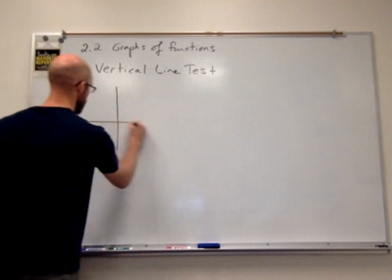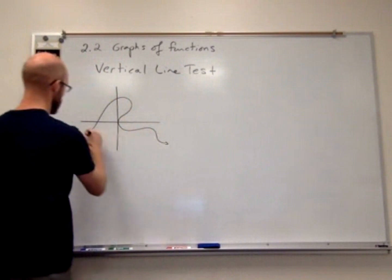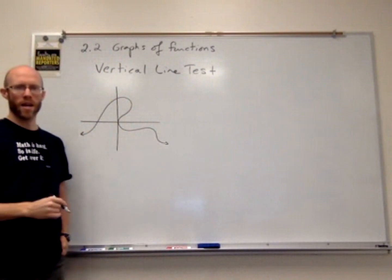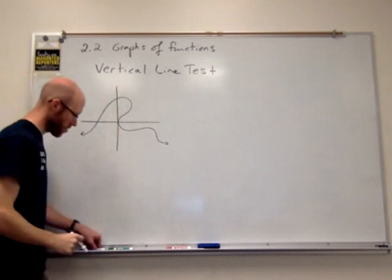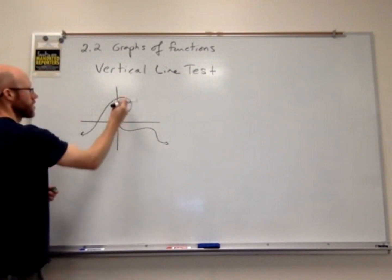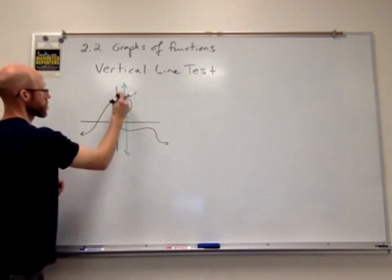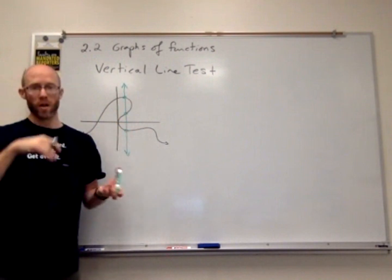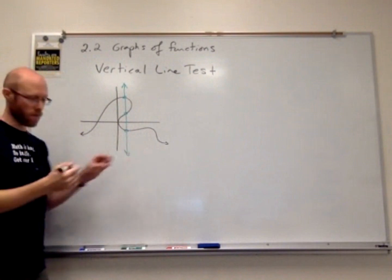An example of something that fails might be a graph that looks like a squiggly curve. In this example, I can find a vertical line — drawn here in green — that intersects the graph more than once. The green line actually intersects at three different points, but it only has to intersect two or more times, and as soon as that occurs, this is no longer a function.